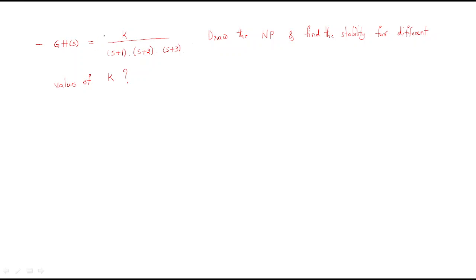Hello everyone. In this session we will discuss one problem. The problem is GH(s) = K / [(s+1)(s+2)(s+3)]. We are given three poles. Draw the Nyquist plot and find the stability for different values of K.